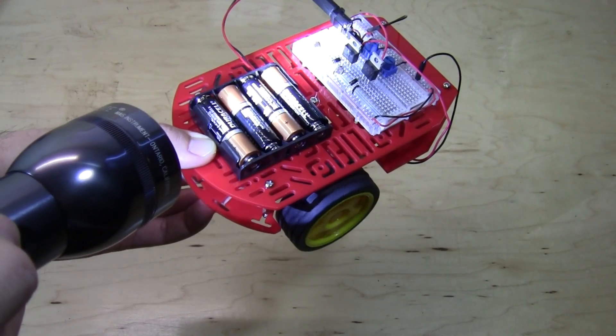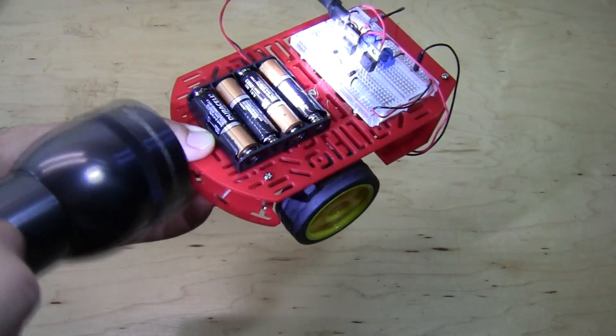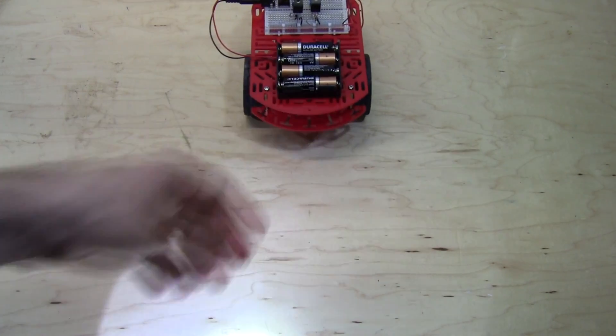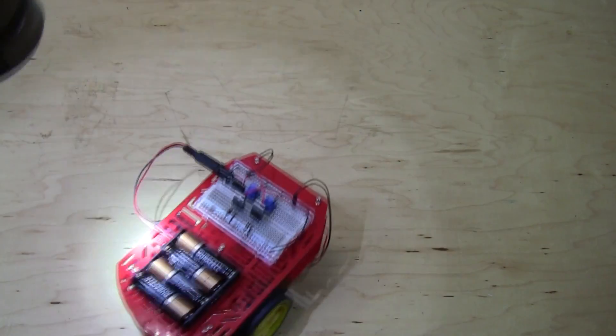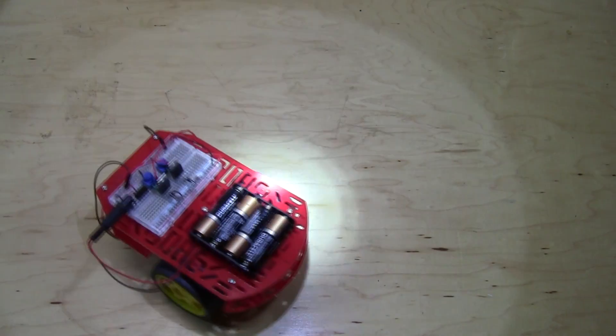What this allows me to do when I put the robot down is steer it left and right using the flashlight. You can see that when I put the robot down on the table, I can use the flashlight to drive it around and make it follow the beam.